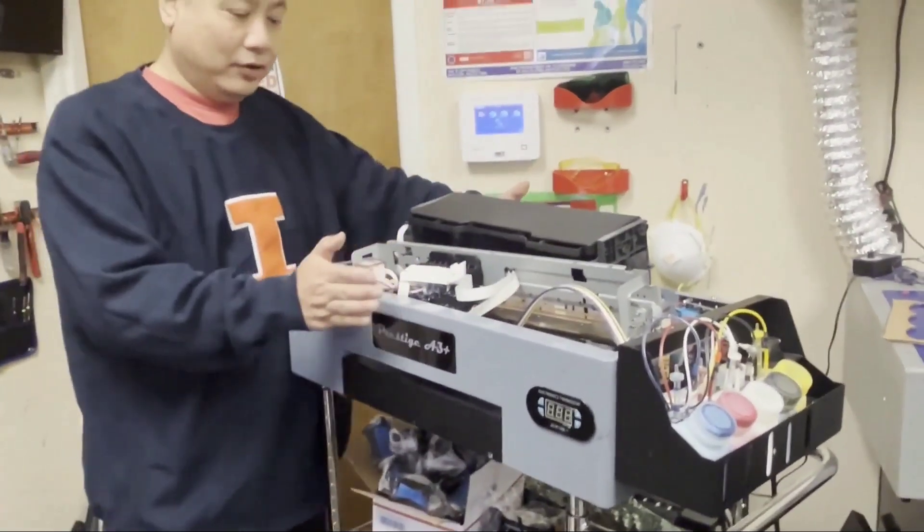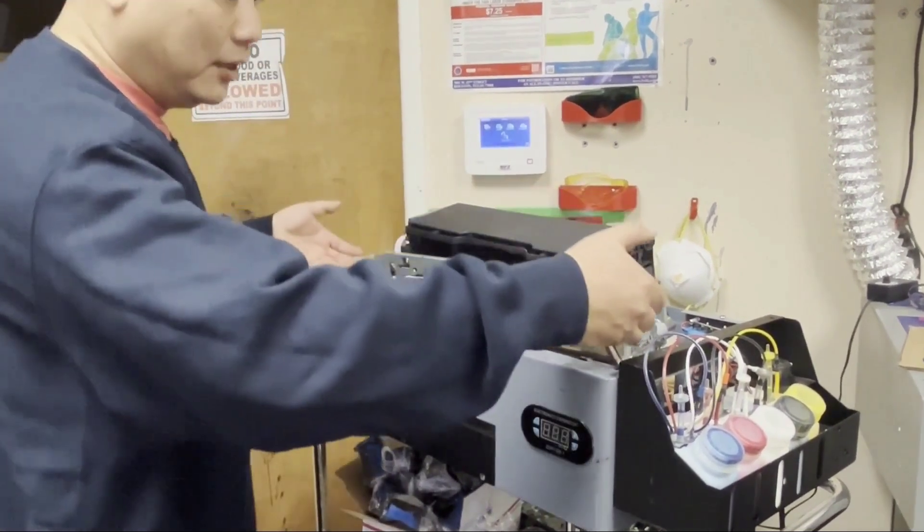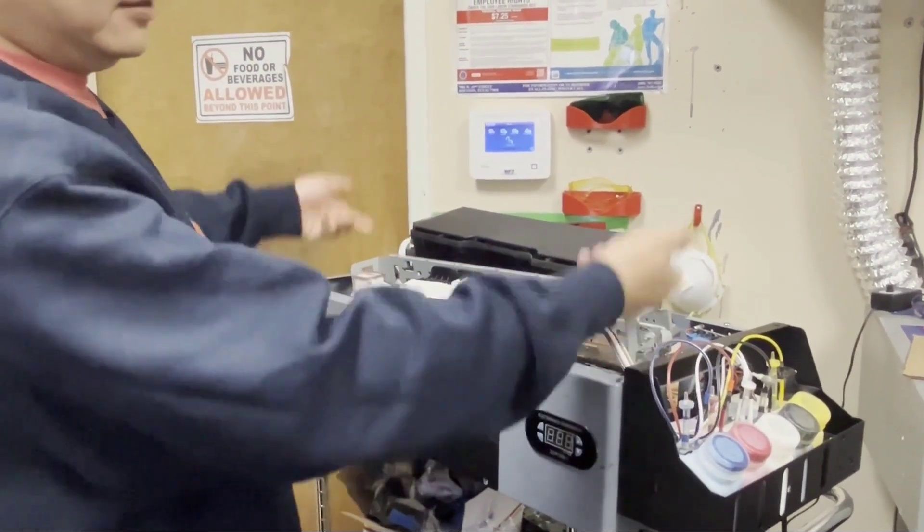And then, why is the white one easier? Because the white one somehow is bulkier. So you just unscrew it, grab this one, and just lift it right up.